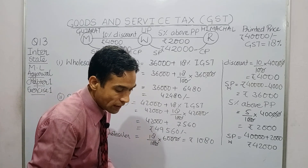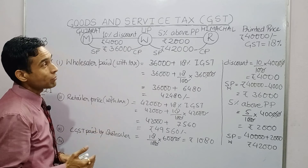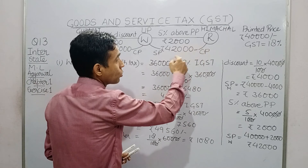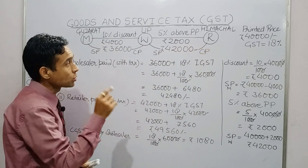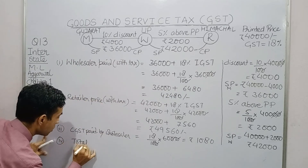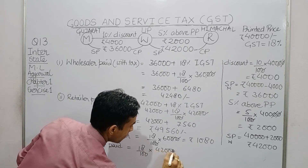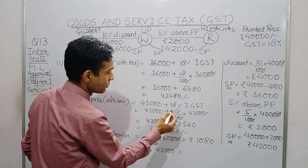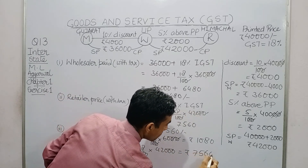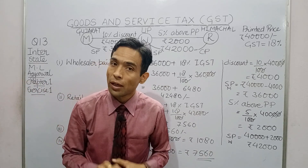In the fourth part, we have to find the total amount of tax received by the central government across the whole transaction. Here we consider the retailer as the final party. The total IGST collected across the chain has already been calculated. Therefore, the total CGST — that is, tax received by the central government — is ₹7,560 rupees.